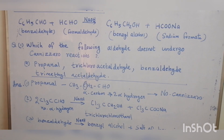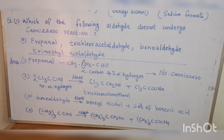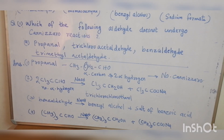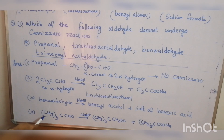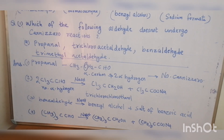Third, benzaldehyde — two molecules of benzaldehyde react with sodium hydroxide forming benzyl alcohol and the salt of benzoic acid. Fourth, trimethylacetaldehyde — there is an alpha-carbon but no hydrogen atoms on it, only three methyl groups, so there is no alpha-hydrogen. This one undergoes the Cannizzaro reaction, reacting with sodium hydroxide to form an alcohol and the sodium salt of the acid.